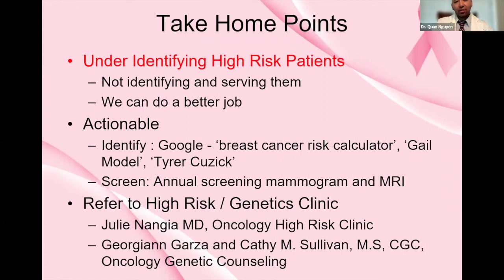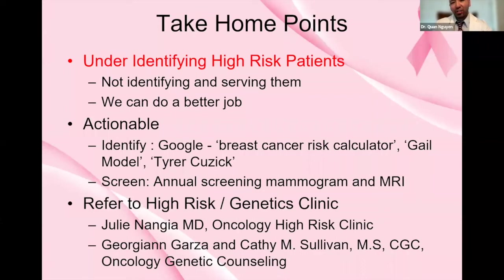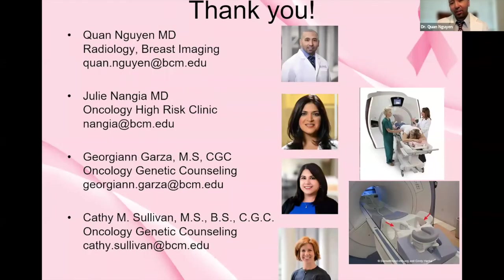Take-home points: we are under-identifying high-risk patients as a community — we can do better. It is actionable: use questionnaires, talk to patients earlier, and use calculators like the Gale model and Tyrer-Cuzick model to identify them. Once identified, screen them with annual mammogram plus breast MRI. At Baylor College of Medicine, we refer them to our high-risk genetics clinic team. That concludes the presentation.